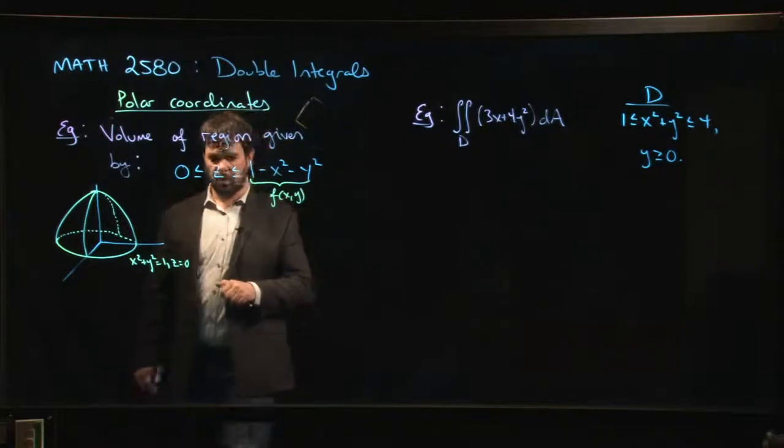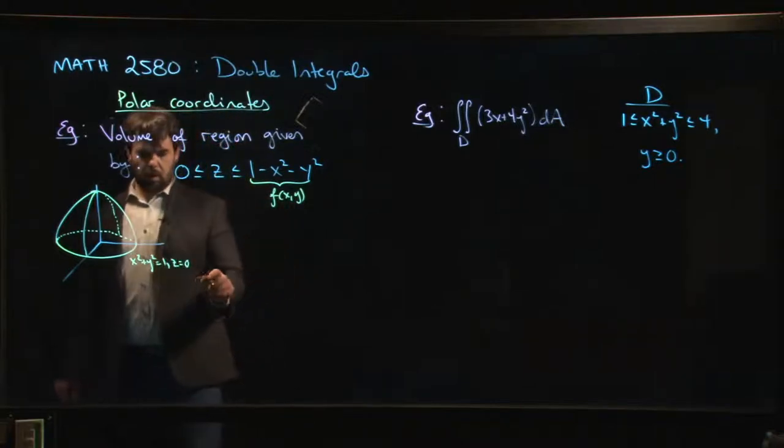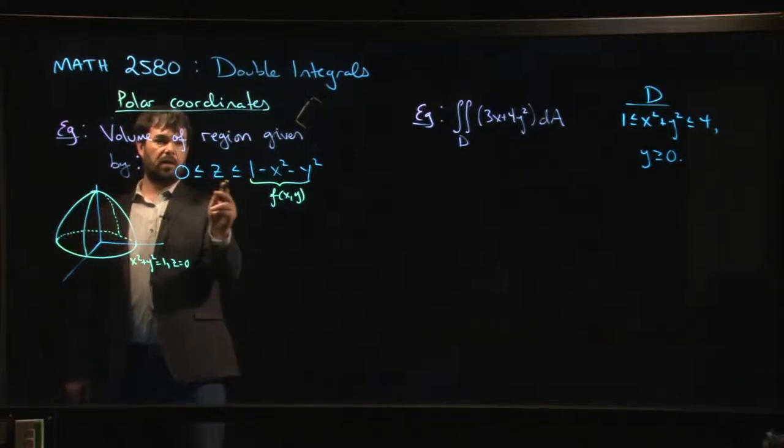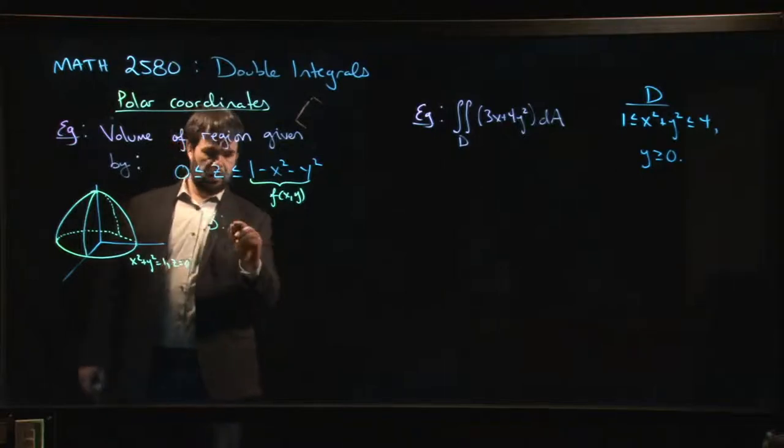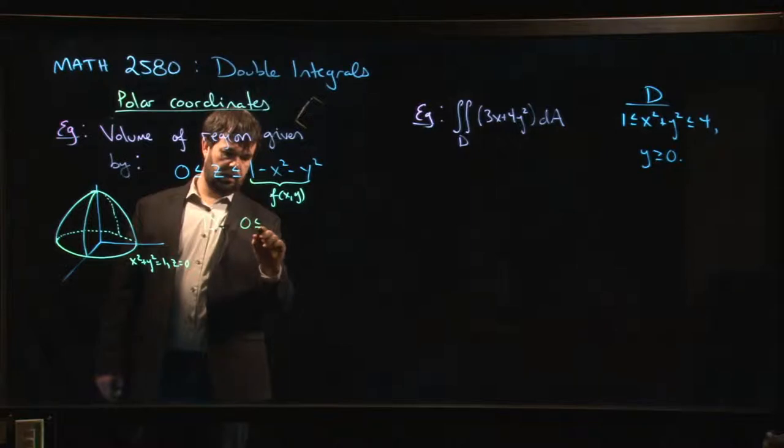The first thing we need to do in this problem is realize that the volume that we're trying to compute is the volume under a graph. It's the graph of this function here, f of x, y, and it's a volume over a region. What region?